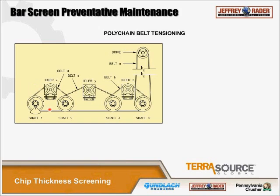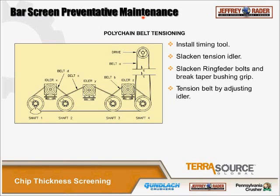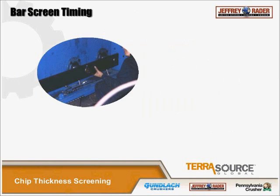Check the lubrication system to ensure it's functioning, and inspect all idler bearings — check gearbox reducer lubricants per manufacturer specification. When tensioning the timing belts: use a timing tool that holds all shafts; slacken the idler tension; slacken the ring feeder bolts on the shafts so the sprockets can rotate; tension the belt by adjusting the idler; then tighten the ring cutter bolts and recheck tensioning. Over-tensioning these belts is just as bad as under-tensioning, so strict attention should be paid. This shows a timing tool being installed with keys on top and bottom.